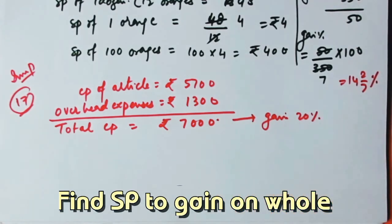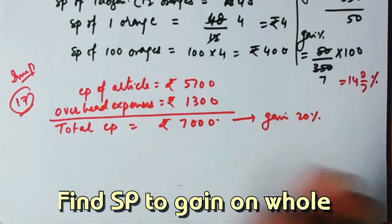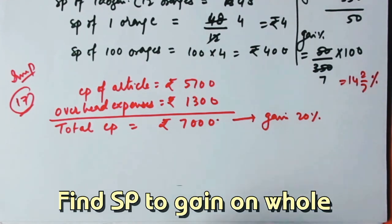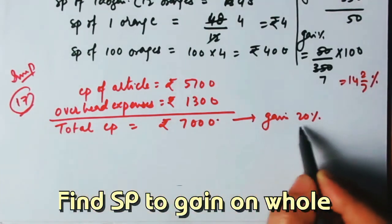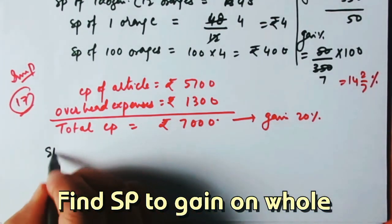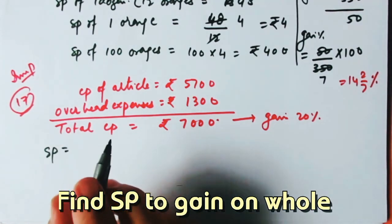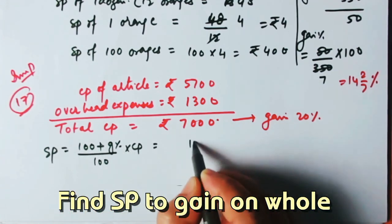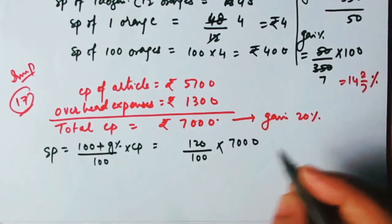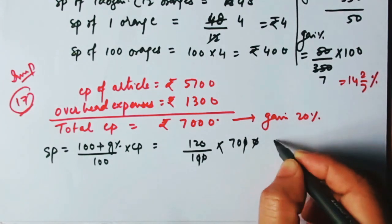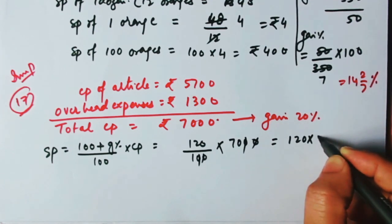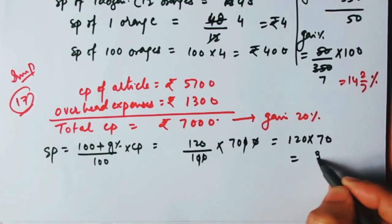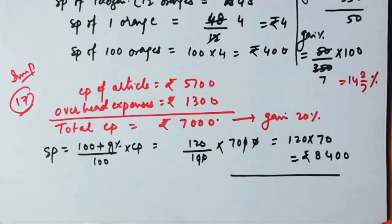They want to gain 20% by selling. Using the formula: SP = (100 + gain%)/100 × CP = 120/100 × 7000 = 12 × 70 × 10 = ₹8400. So the article must be sold at ₹8400 to achieve a 20% gain on ₹7000.